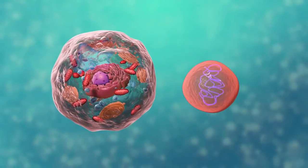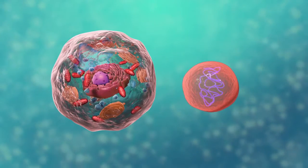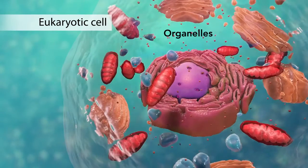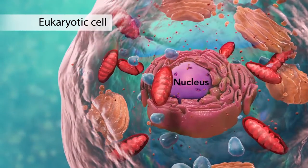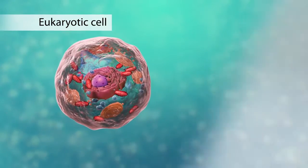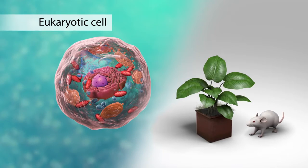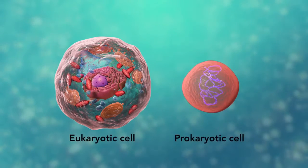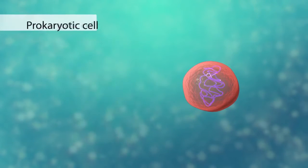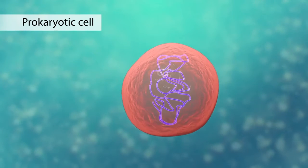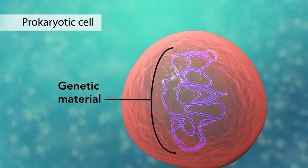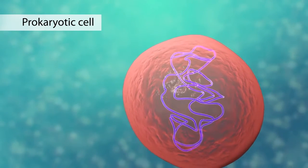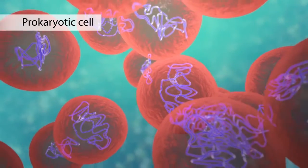There are two broad categories of cells. The first is eukaryotic cells. They have organelles, which include the nucleus and other special parts. Eukaryotic cells are more advanced, complex cells such as those found in plants and animals. The second category is prokaryotic cells. They don't have a nucleus or membrane-enclosed organelles. They do have genetic material, but it's not contained within a nucleus. Prokaryotic cells are always one-celled or unicellular organisms, such as bacteria.